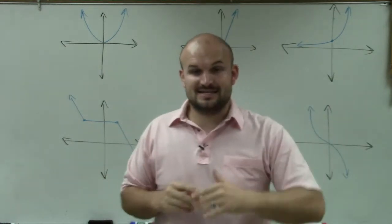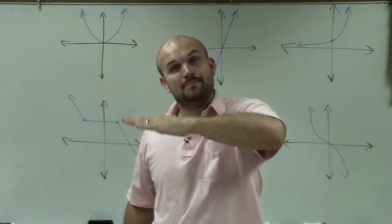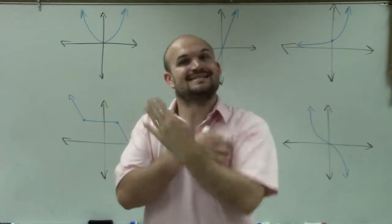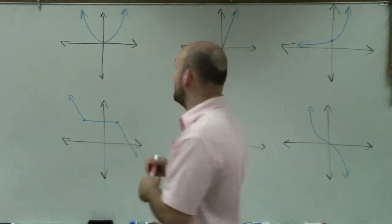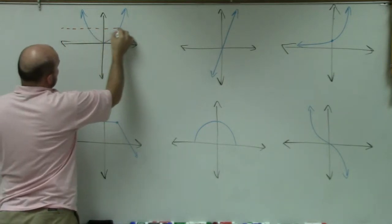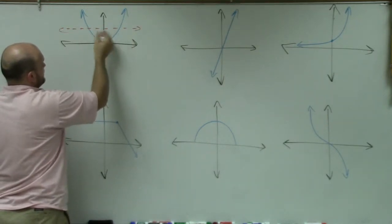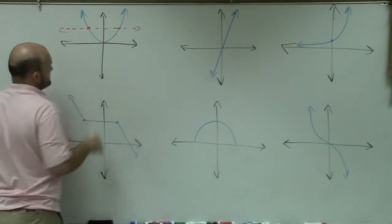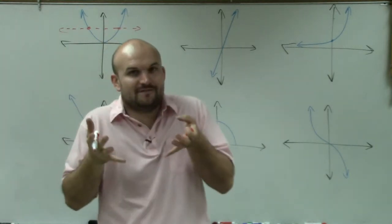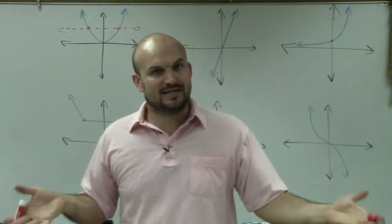The horizontal line test means you're taking a horizontal line across the function. If at any point your horizontal line crosses the graph twice, it does not pass the horizontal line test. You can look at our first example here — this does not pass the horizontal line test. At an output value of, say, three, there are two x values.